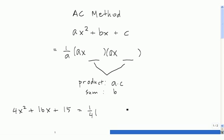We have our two sets of parentheses. The first slot, we again take a which is 4 times x. Same thing will always go here.